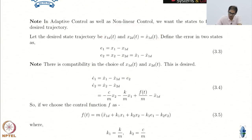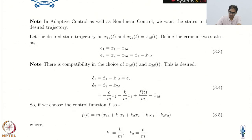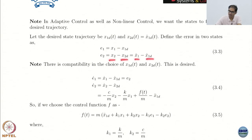Once you have this, we define error variables, because what we have learned is how to drive things to 0. So we want to construct error variables and drive the errors to 0. The position error is just x1 minus x1_desired, and the velocity error is x2 minus x2_desired. And you can see that x2 minus x2_desired is basically x1_dot minus x1_desired_dot, from the dynamics of the system.